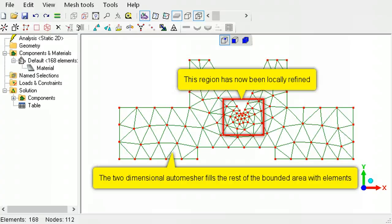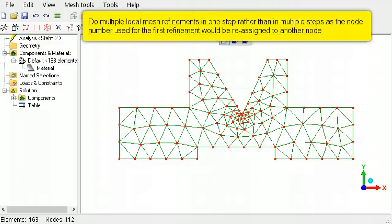As the two-dimensional auto mesher refines a mesh using node numbers, if you want to do multiple local refinements, do it all at one time instead of doing it sequentially, as the node number used for the earlier refinement could now be assigned to another node.